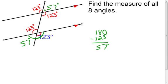Then using vertical angles being congruent, this angle and this angle have to be congruent — so this one is 57 degrees. The same thing happens here with my vertical angles, giving me another 57 degree angle. Now I have all eight of them filled in. There are many other ways we could have gone about this using the different theorems dealing with parallel lines cut by a transversal.